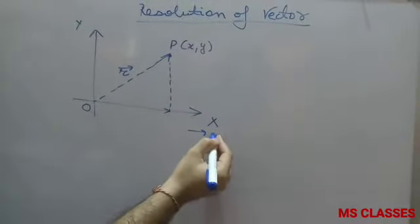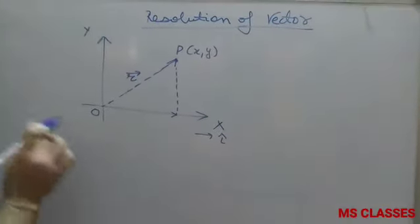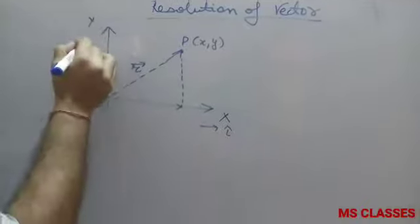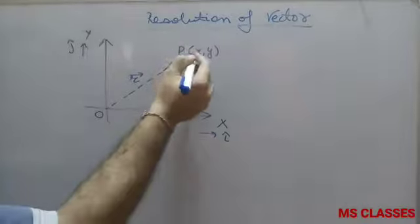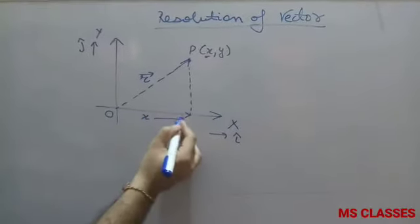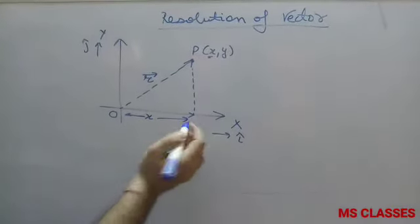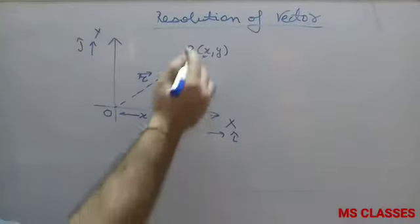Here we write i-cap, a unit vector along the x-axis, and j-cap along the y-axis. If this distance is x, that is OQ, and QP is y. Let's suppose this angle is theta.